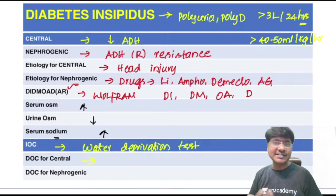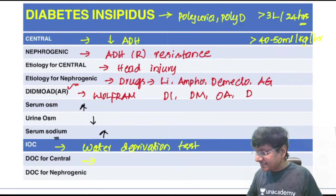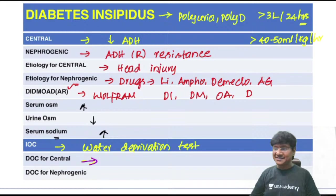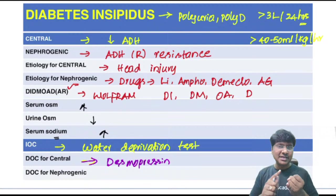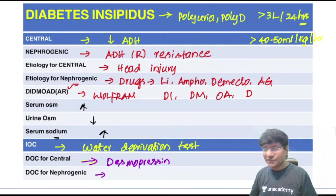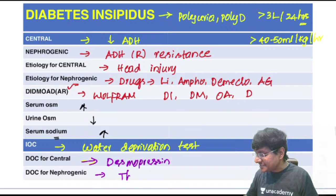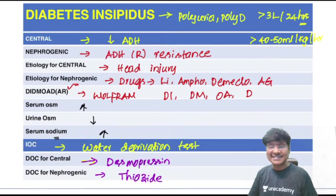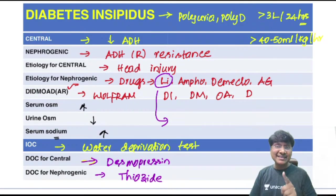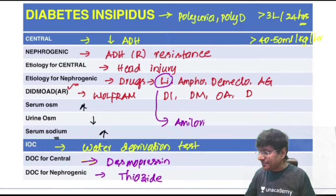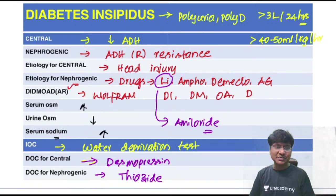The drug of choice in central diabetes insipidus is desmopressin, which can be given orally, subcutaneously, by inhalation, or intravenously. For nephrogenic diabetes insipidus, the drug of choice is thiazide diuretics. For lithium-induced diabetes insipidus specifically, the drug of choice is amiloride.